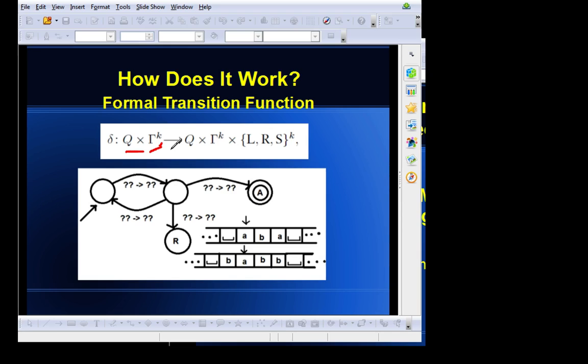To transitioning to the new state of the machine times the symbols to write under the head times the possible directions to move the heads. Everything else stays the same. So, essentially, we are traversing the Turing machine the same way as we usually do. But now we have to account for additional tapes, depending on the Turing machine itself.